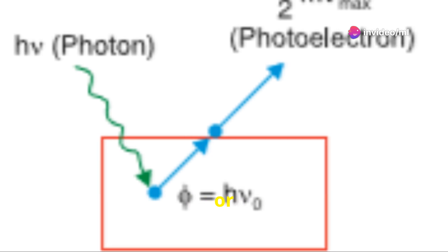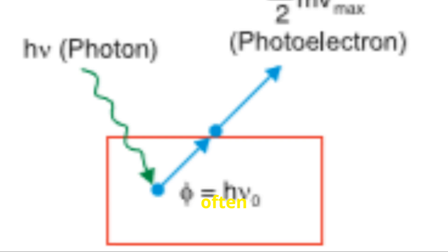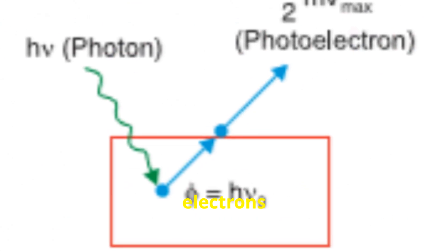Photoelectric effect, phenomenon in which electrically charged particles are released from or within a material when it absorbs electromagnetic radiation. The effect is often defined as the ejection of electrons from a metal plate when light falls on it.